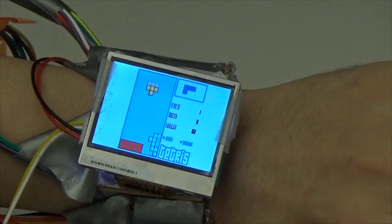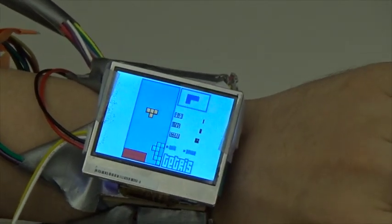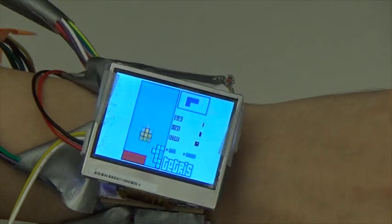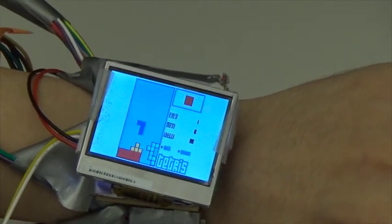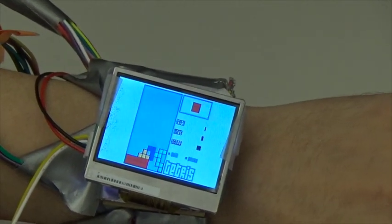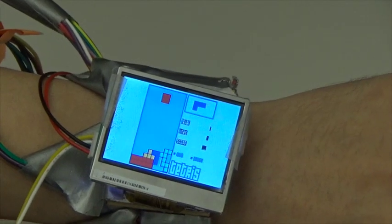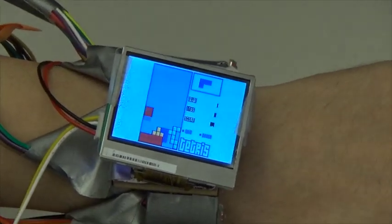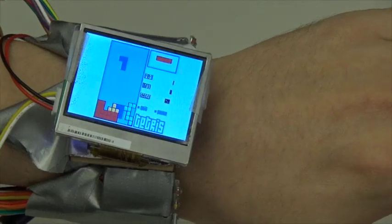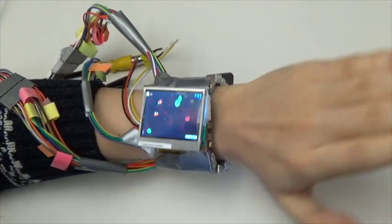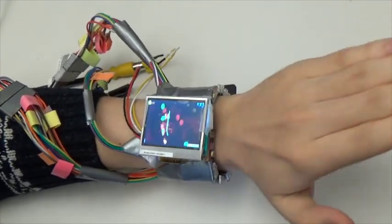Finally, we show the user can play video games using our input. In this Tetris game, the user can tilt the wrist to control a tetramino. Similarly, the user can play Fruit Ninja using richer wrist movements.